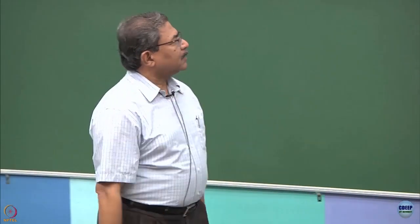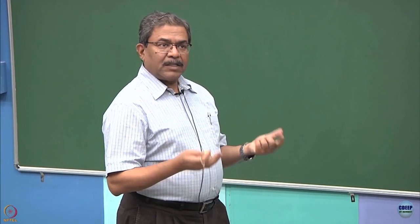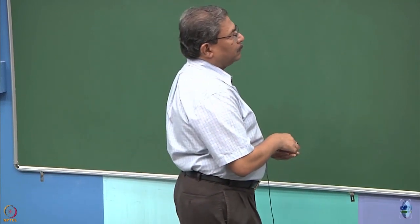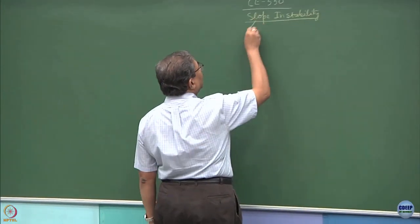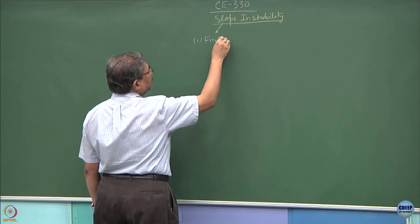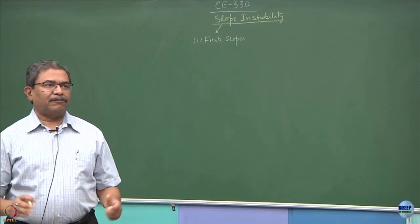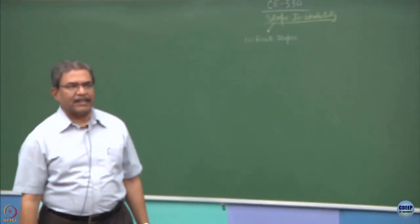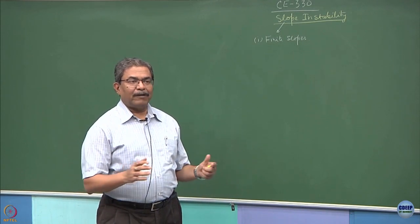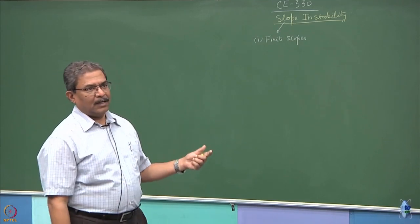Now, having done all this, I wish to discuss the stability or instability of slopes. When we talk about this, we normally consider two types of slopes. The first category is finite slopes. It is a misnomer — most of the time people mistake this. They think finite slopes are finite in size and infinite slopes are infinite in size. That is not correct. It has something else to do with, which we will be discussing today.